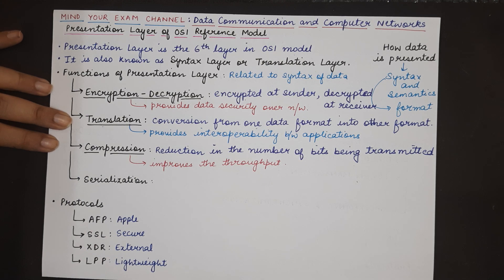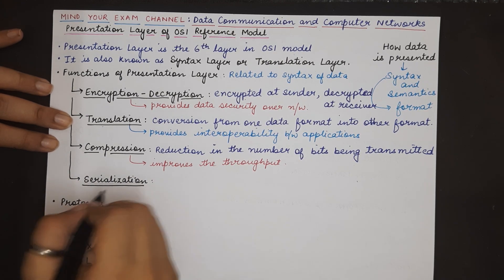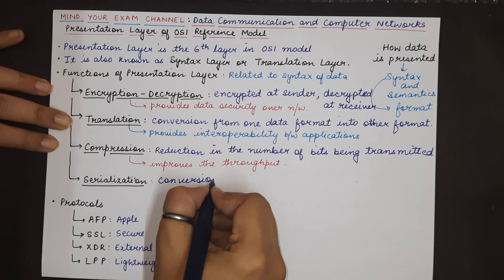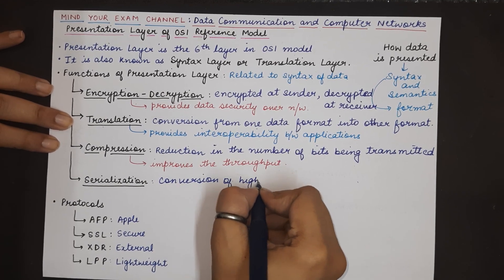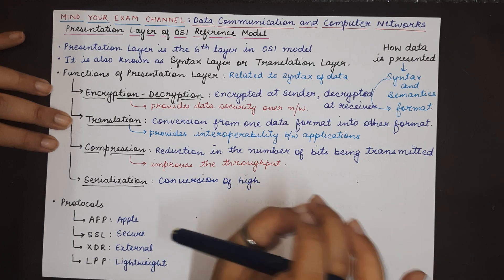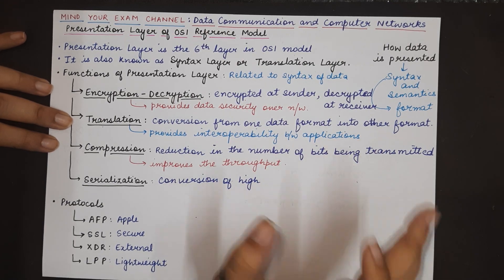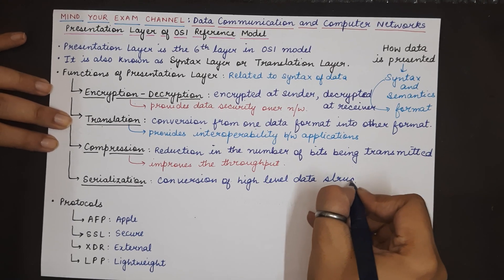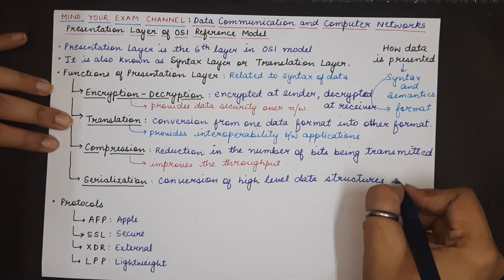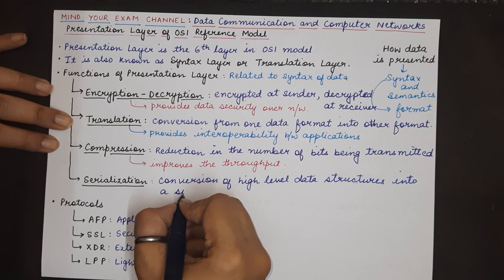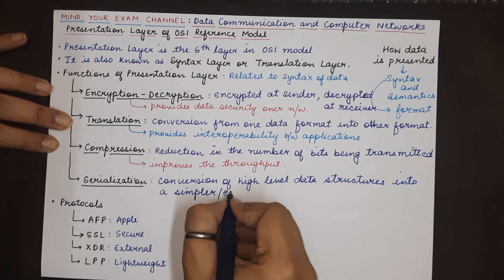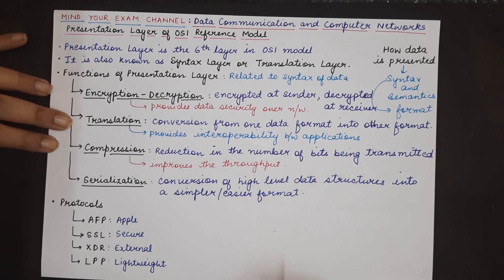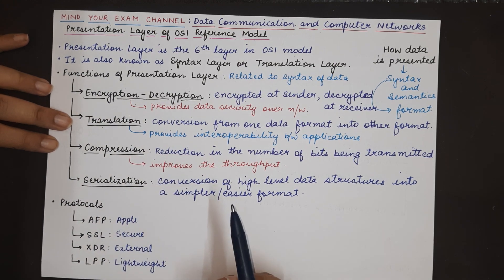The next and the last important functionality of the presentation layer is serialization. Serialization basically means conversion of high level data structures into a simpler format that can be easily understood and stored at the receiving end. High level data structures are converted into a simpler and an easier format which can be stored at the receiving end in a better manner. These were the four main functionalities of the presentation layer.